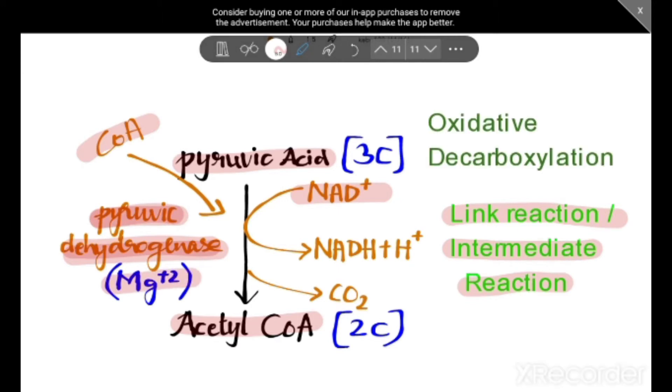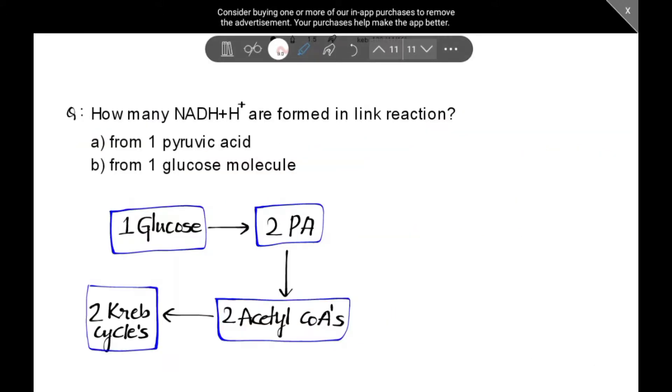This step is called oxidative decarboxylation. Oxidative is removal of hydrogens. Here, hydrogens are removed from pyruvic acid and added to NAD+, forming NADH + H⁺. Decarboxylation is removal of carbon dioxide. That is why acetyl coenzyme A has 2 carbons instead of 3 carbons of pyruvic acid.